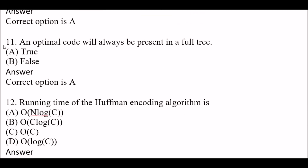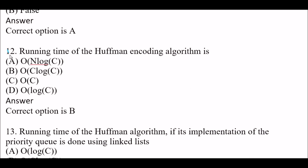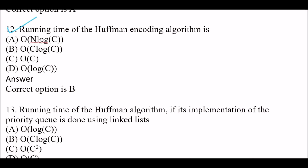Next question: An optimal code will always be present in a full tree — true or false? The answer is true. Next question: The running time of the Huffman coding algorithm is — Option A: O(N log C). Option B: O(C log C). Option C: O(C). Option D: O(log C). The right answer is Option B, O(C log C).